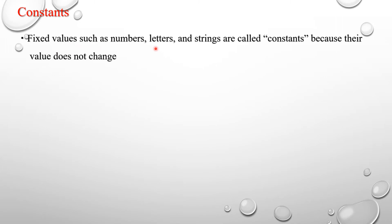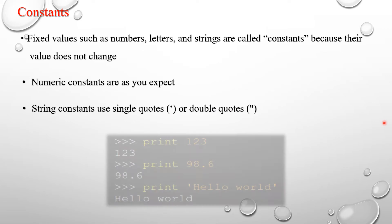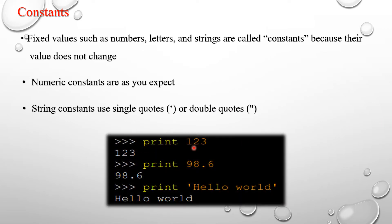Fixed values such as numbers, letters, and integers are called constants because their value does not change. Numeric constants are as you expect. String constants use single quotes or double quotes. For example, print(123) outputs 123 as an integer value. print(98.6) outputs 98.6 as a float. To print a string value we represent it in single or double quotes, such as print('hello'), and the interpreter prints the word hello.